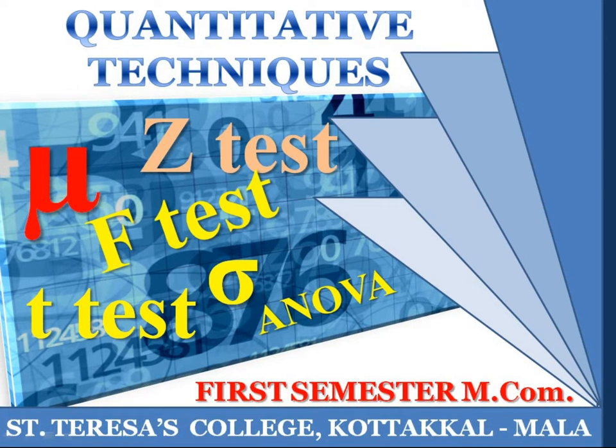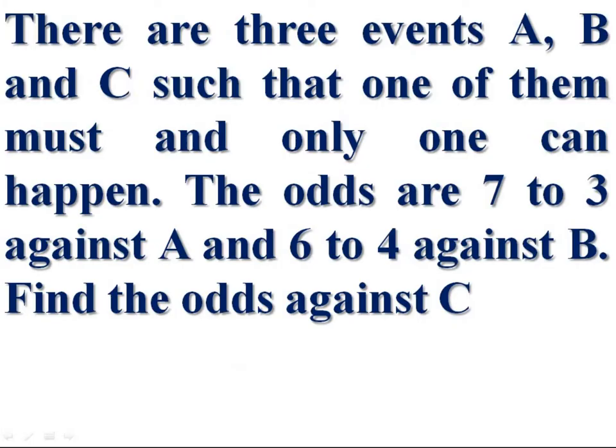Hi students! Namaskaram! Now we are solving a practical problem in the chapter probability. There are three events A, B and C such that one of them must happen and only one can happen. The odds are 7 to 3 against A and 6 to 4 against B. Find the odds against C.